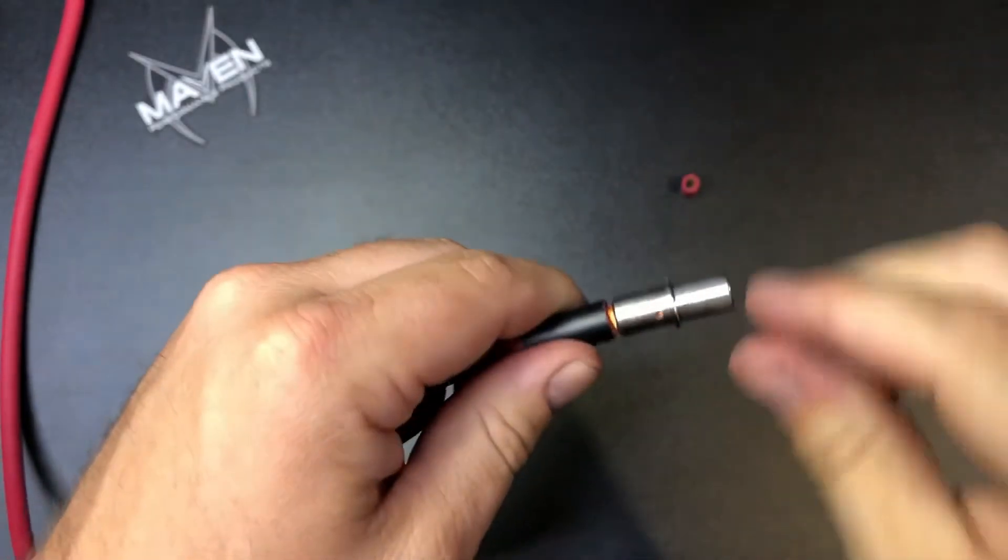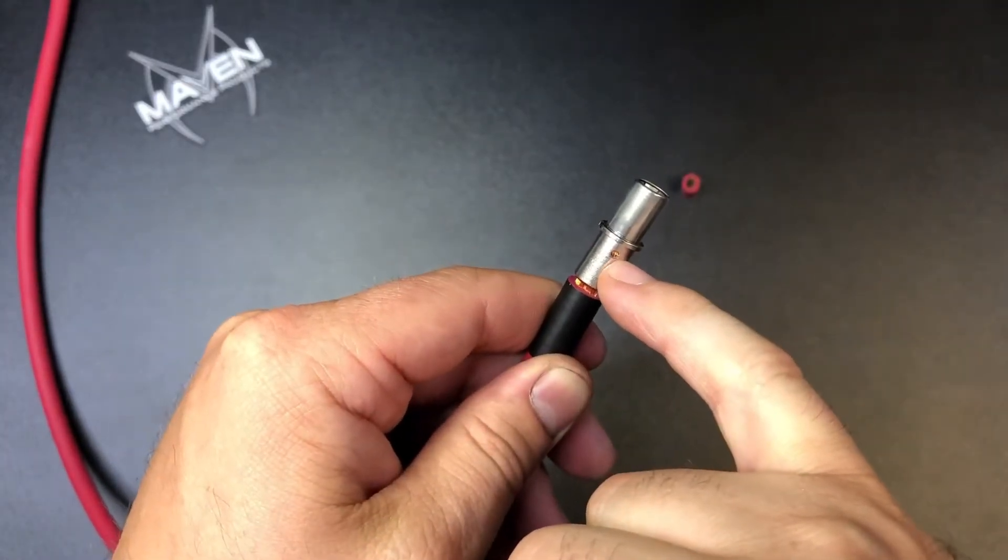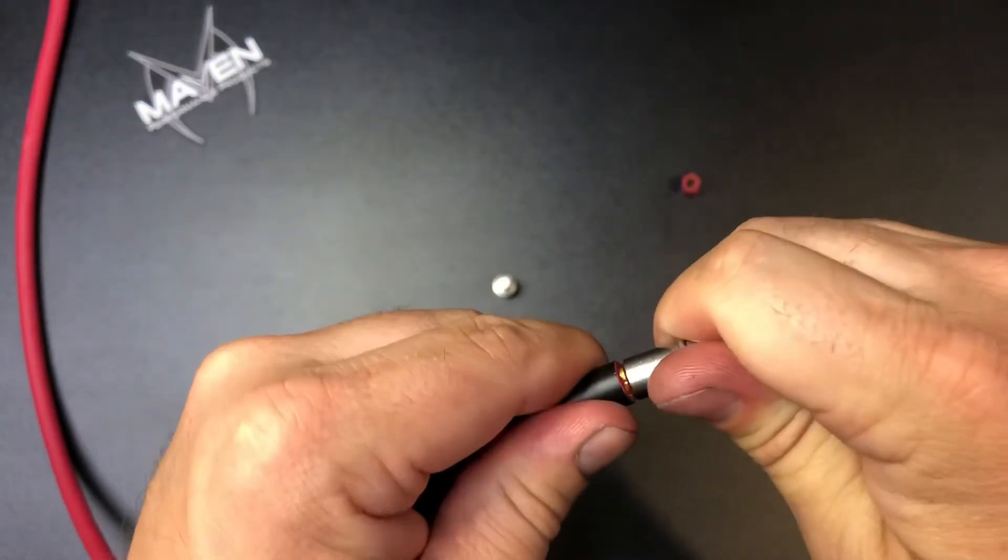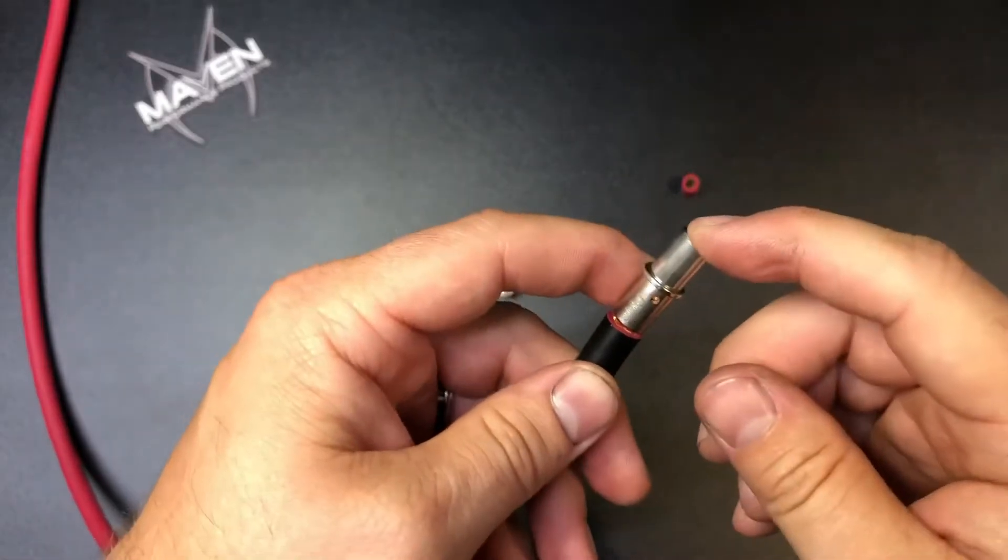There we are. Push it all the way down, and we have just a little bit of gap down here. You can see inside this hole all the conductor strands in there. At this point we can move on to crimping.